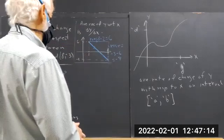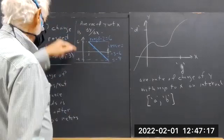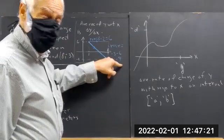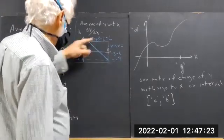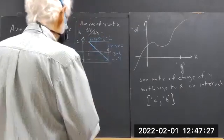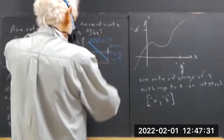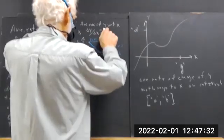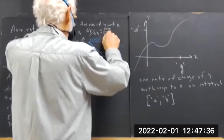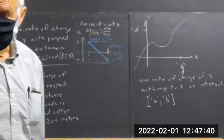The delta Y and delta X: delta Y is the change in the Y value. You go from 6 to negative 3, so the change in Y is negative 9. You go from 2 to 8, so the change in X is 6. The change in Y over the change in X is rise divided by run.